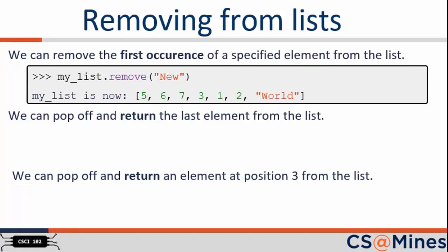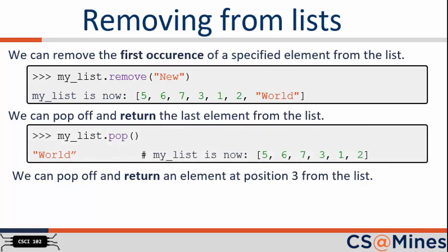We now consider removing elements from a list. The remove function removes the first occurrence of a specified element from a list. So with the command shown, the element "new" is removed from our list. If there have been two elements with the value "new", then only the first "new" in the list will have been removed. We can also pop off the last element of the list with the pop function. In this case, pop will remove the last element in the list. Also notice that the pop function returns the value of that element.